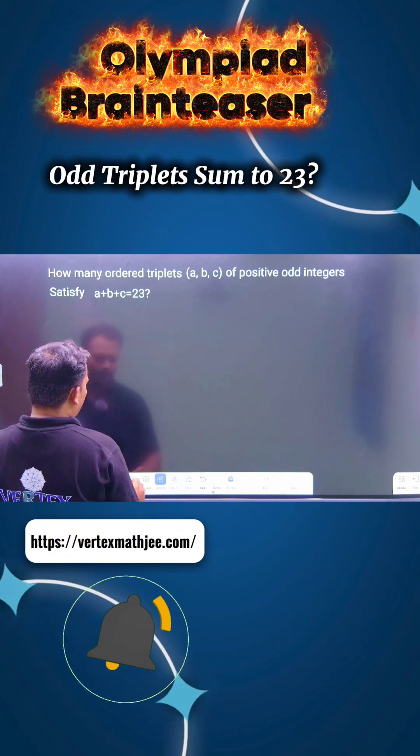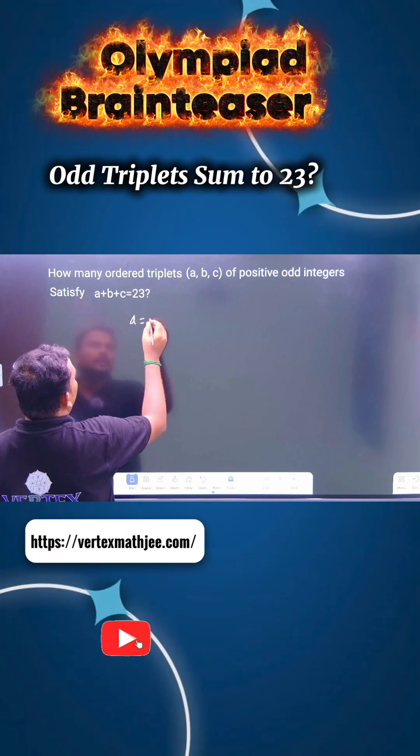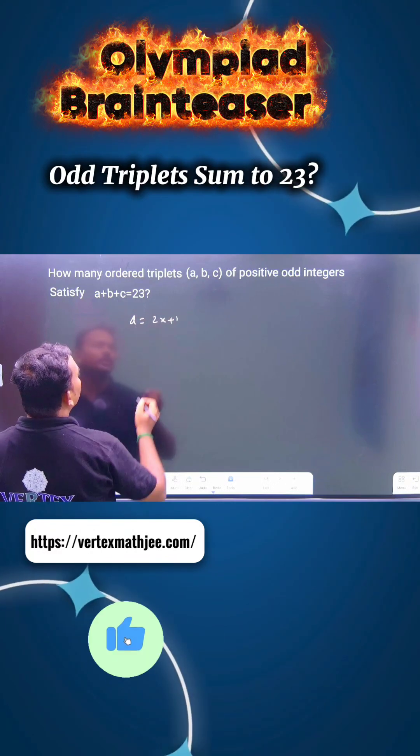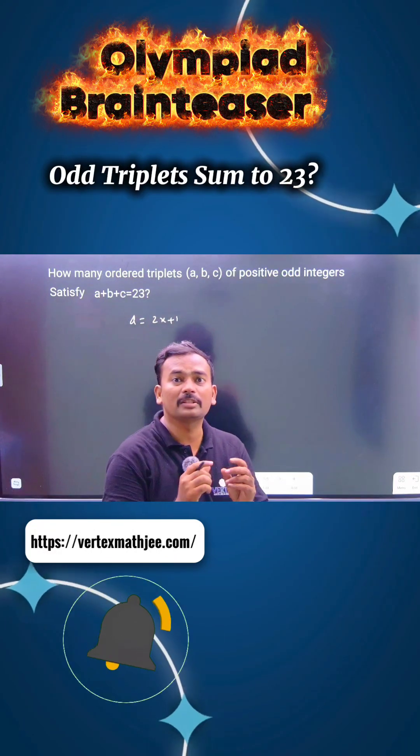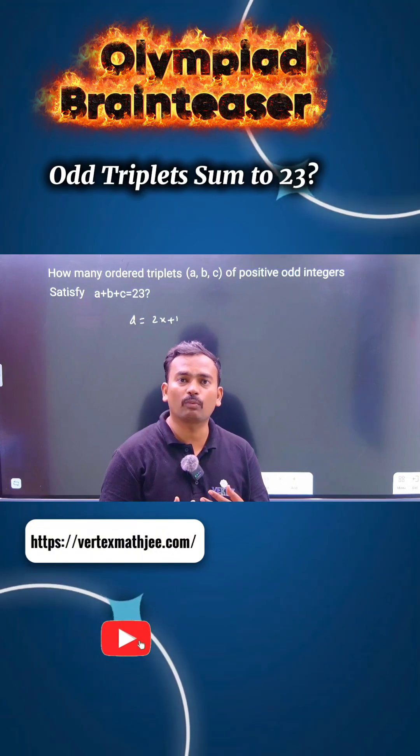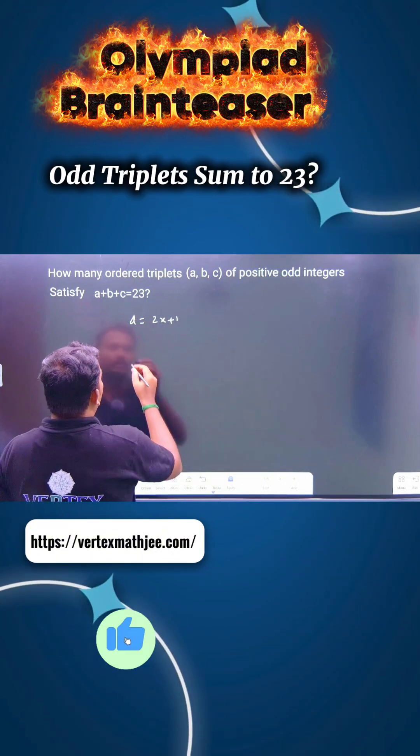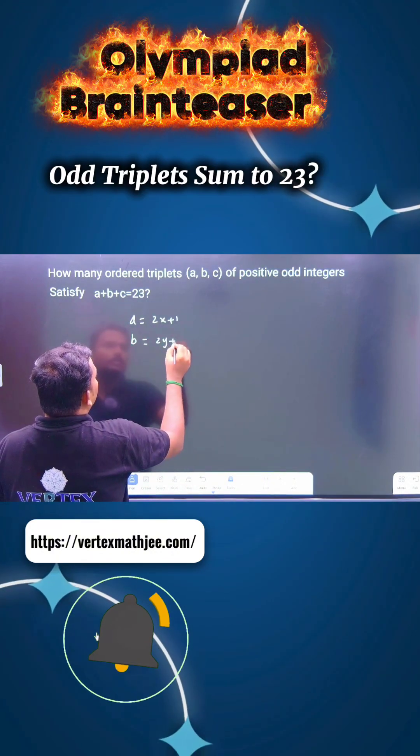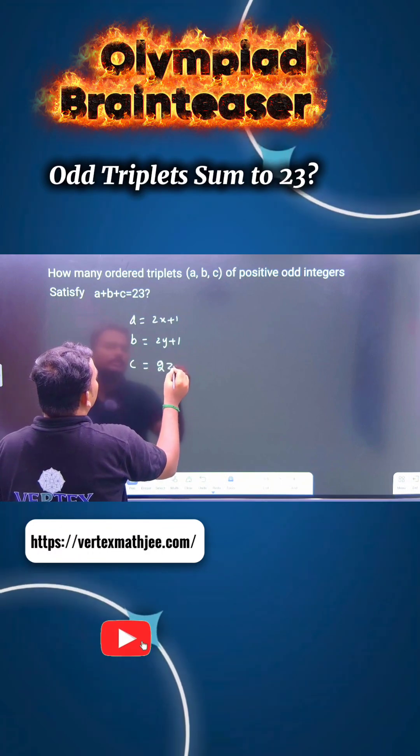Let's take A equals 2x plus 1, because 2x is a multiple of 2, it's an even number. You add 1, it becomes an odd number. Let's take B equals 2y plus 1, C equals 2z plus 1.